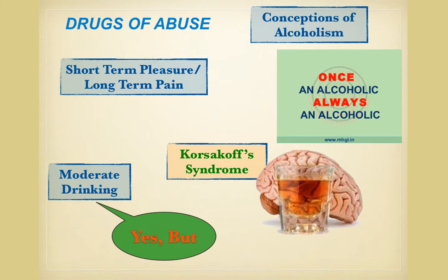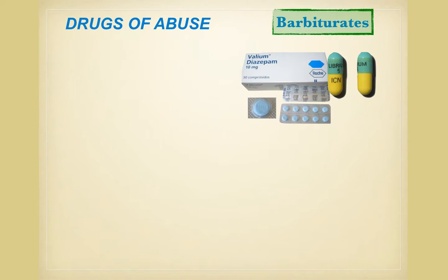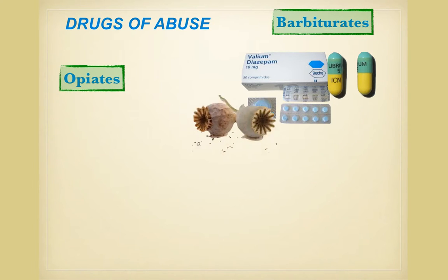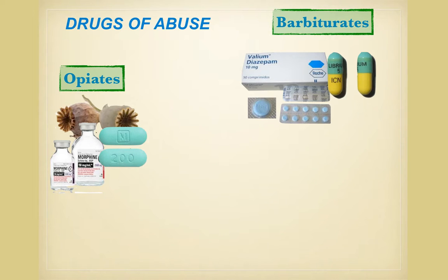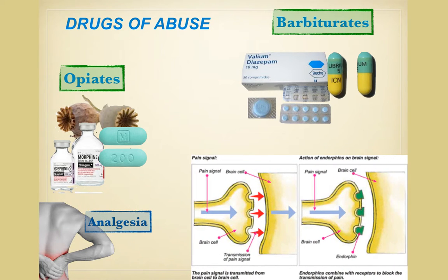Barbiturates are depressants or sedatives that have been used medically for the relief of anxiety or short-term insomnia, among other uses. They can produce both psychological and physiological dependence in terms of tolerance and withdrawal syndrome. Opiates, also known as narcotics — such as morphine and heroin — are derived from the opium poppy. Others are synthesized and used medically to relieve pain, known as analgesia, and they are strongly addictive.